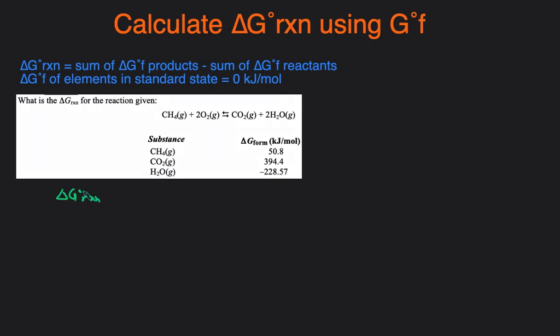By the way, that little circle right here just means standard condition. It equals the sum of the delta G formation of products minus the sum—this sigma just means sum—delta G formation of reactants. Now let's plug numbers in.